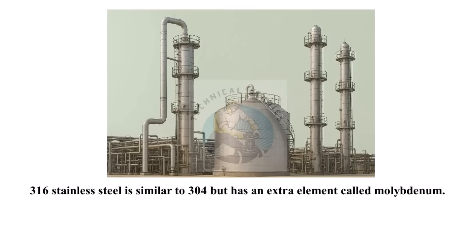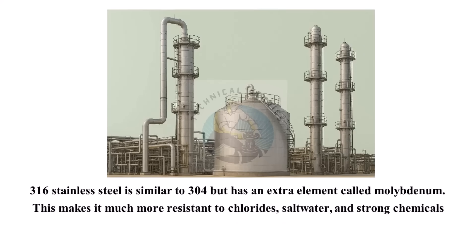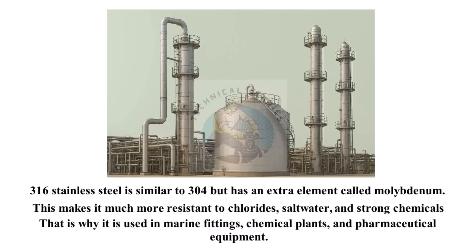316 stainless steel is similar to 304, but has an extra element called molybdenum. This makes it much more resistant to chlorides, salt water, and strong chemicals. That is why it is used in marine fittings, chemical plants, and pharmaceutical equipment.